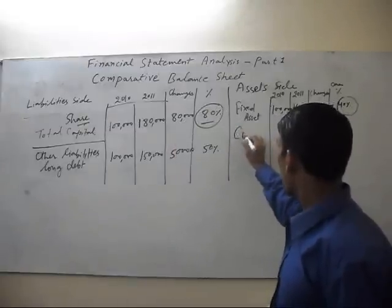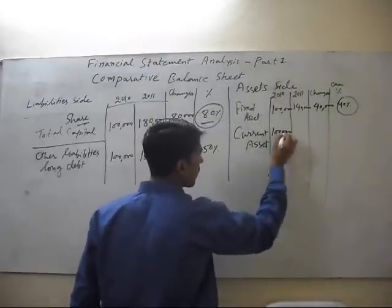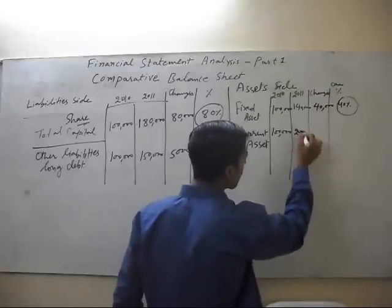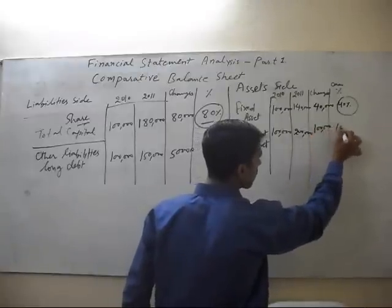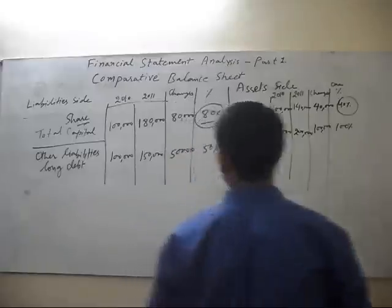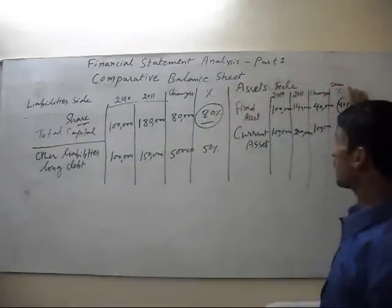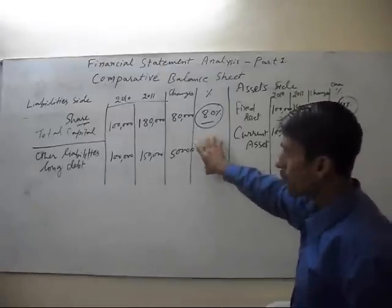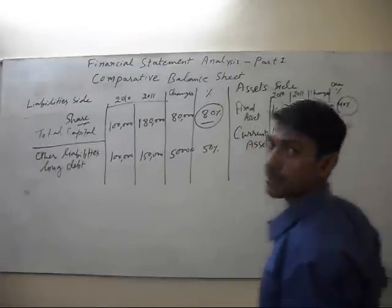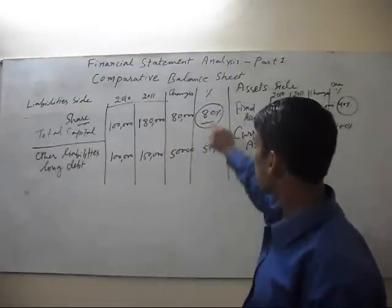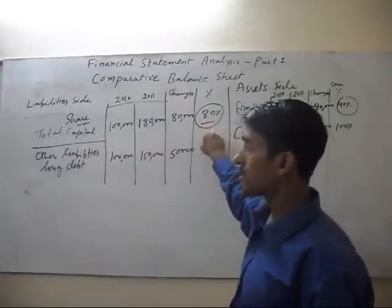And current asset is one lakh here. It increased by two lakh. This is increase of one lakh, it means 100% increase. From this we can get idea: some money of this we invested in fixed asset, and this long term debt is utilized for buying current assets. So this amount indicates that we face loss by this increase in share capital.